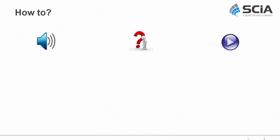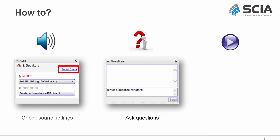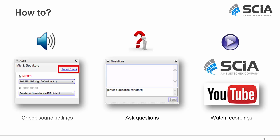Before we start, a few words about the GoToWebinar tool. If you have any problems with sound, you can use the sound check button to change speakers or headphones. Please insert any questions in the question box. We will try to answer all questions at the end of the webinar, or send a list by email afterwards. This webinar will be recorded and available on our YouTube channel or website at www.sia.net.